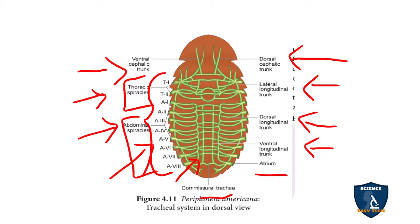The spiracles seen in the thoracic region are called thoracic spiracles, and the openings seen in the abdominal region are called abdominal spiracles. These spiracles are also called stigmata.